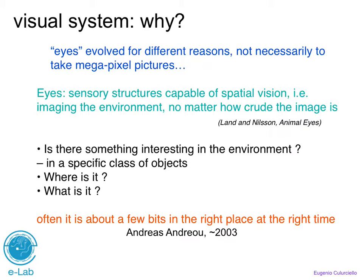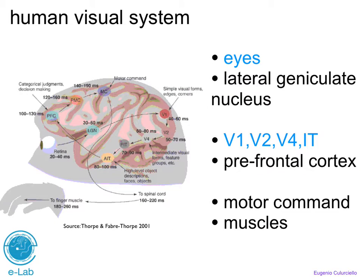In this class, we're going to talk about the principles of computational neuroscience about mainly the visual system in humans. But this applies really to any visual system, no matter how crude it might be. When we talk about the human visual system, at least for the purpose of this course and for the purpose of artificial vision systems, I want to focus on a few key elements.